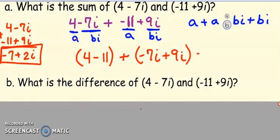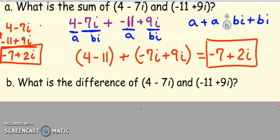And then we just combine like we just did over here. So four and negative 11, that's negative seven. And then negative seven and positive nine gives you a positive two I. And the same answer there, too. So you can do it either way. You can combine them this way or you can go ahead and do it like this. So either way, it works the same way.